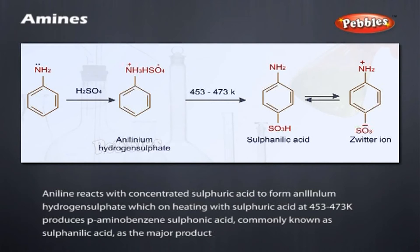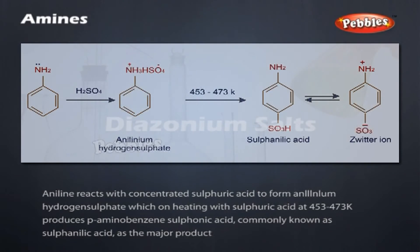Sulphonation: Aniline reacts with concentrated sulfuric acid to form anilinium hydrogensulfate, which on heating with sulfuric acid at 453 to 473 K produces p-aminobenzene sulfonic acid, commonly known as sulfanilic acid, as the major product.